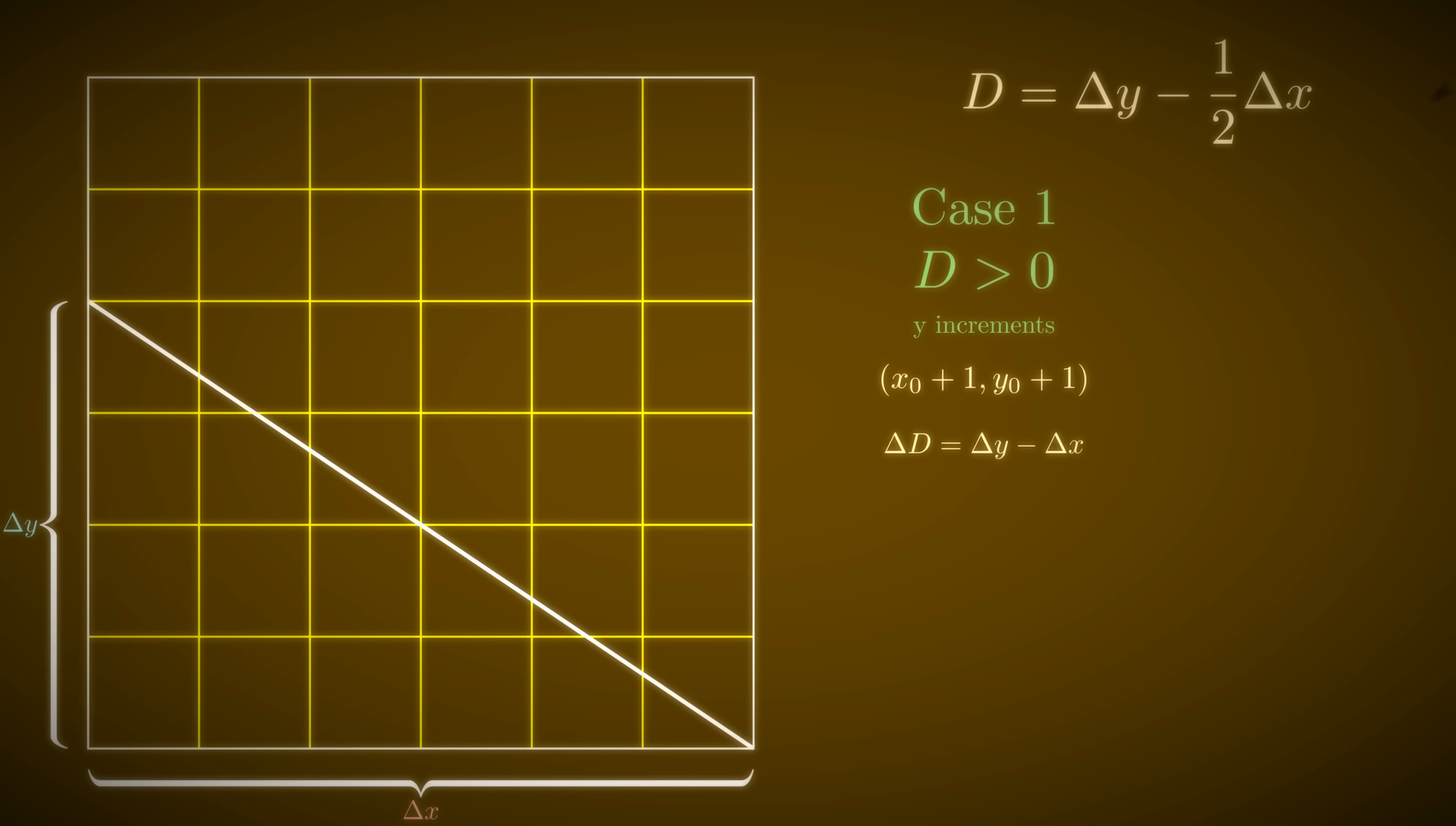If this difference is negative, we have case 2, where y stays the same. If we plug in the adjusted values for the next points, change to standard form, and simplify, the change in d for this case is simply delta y.